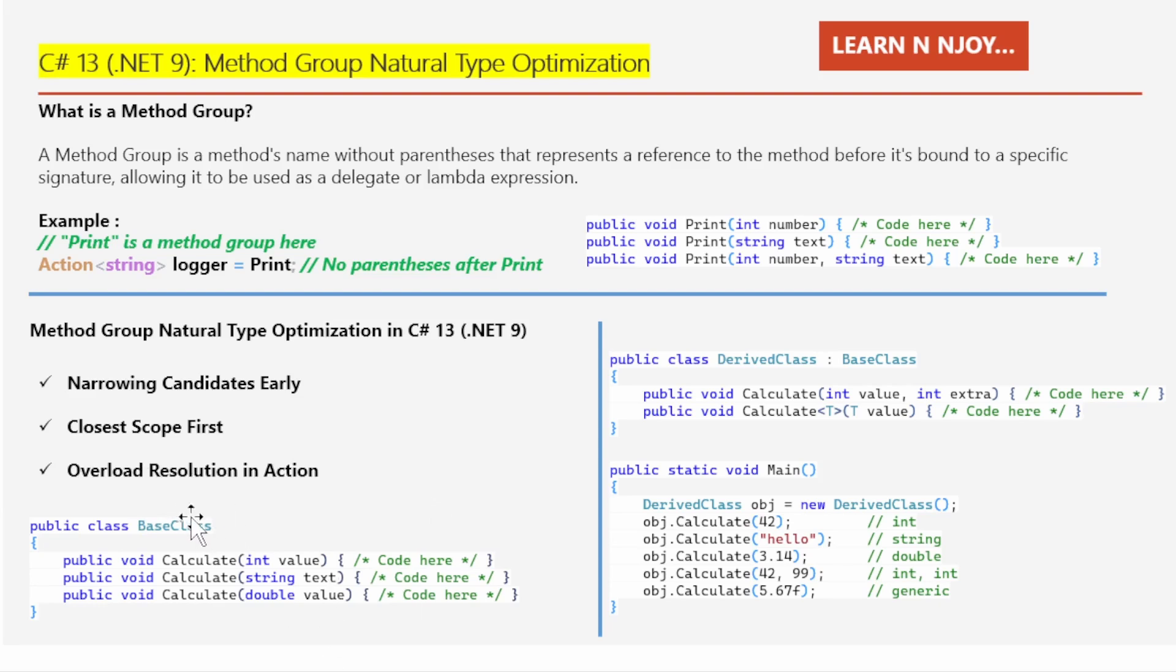Let's understand it with the help of examples over here. So here we have two classes: base class and derived class. The base class is nothing but the parent class. It has three versions of a method called calculate that can handle an integer, a string, and a double. That's three variations of calculate methods residing in this base class. Then we have the derived class, a child class which inherits everything from the parent class. So in this case it's just going to get inherited everything from this base class.